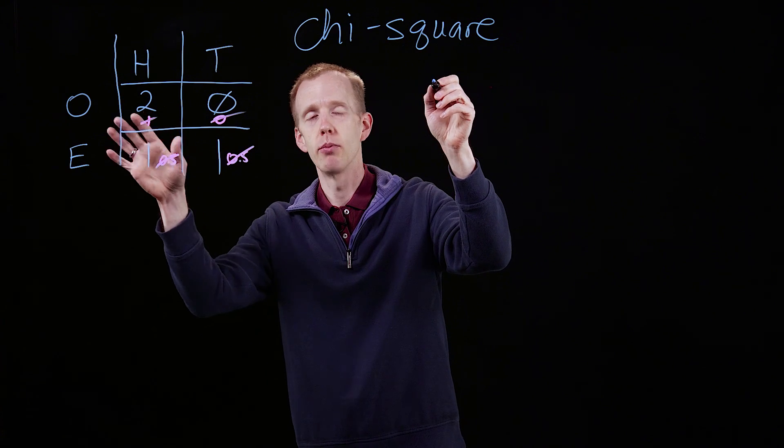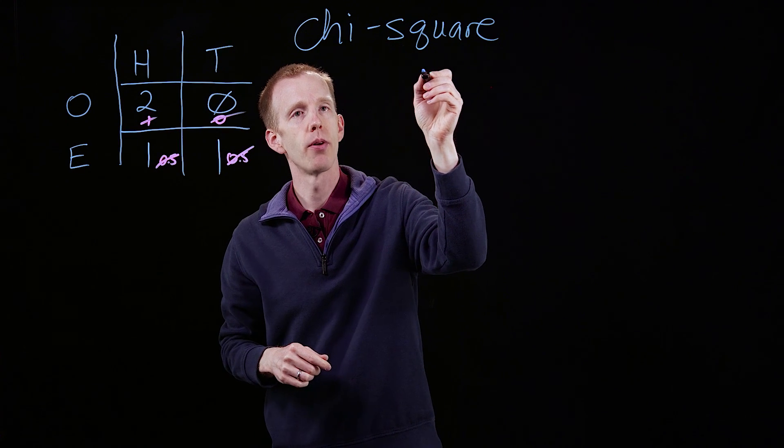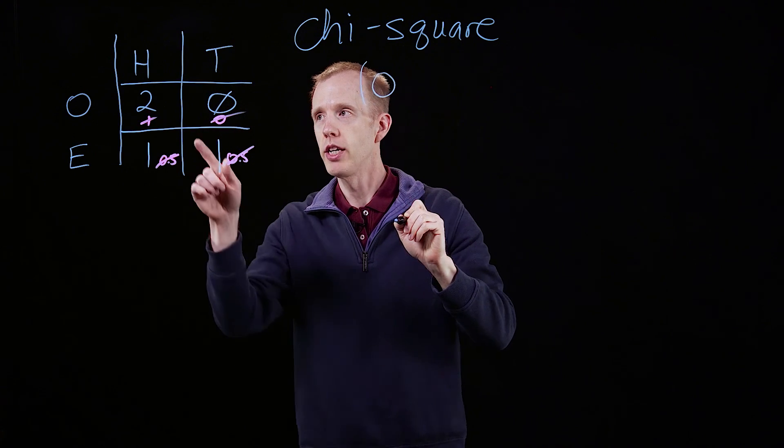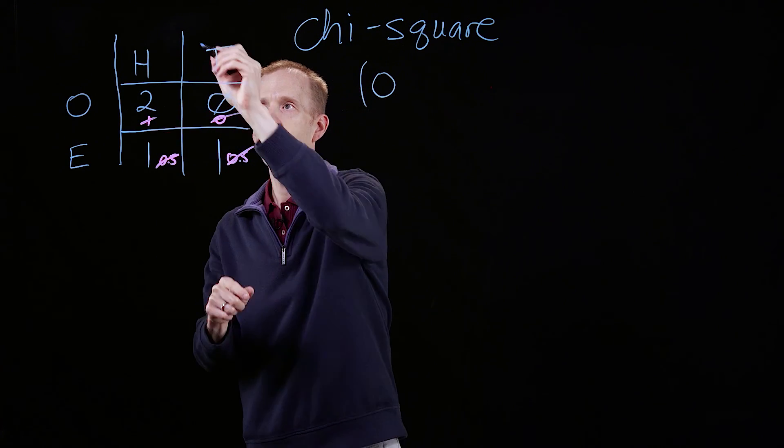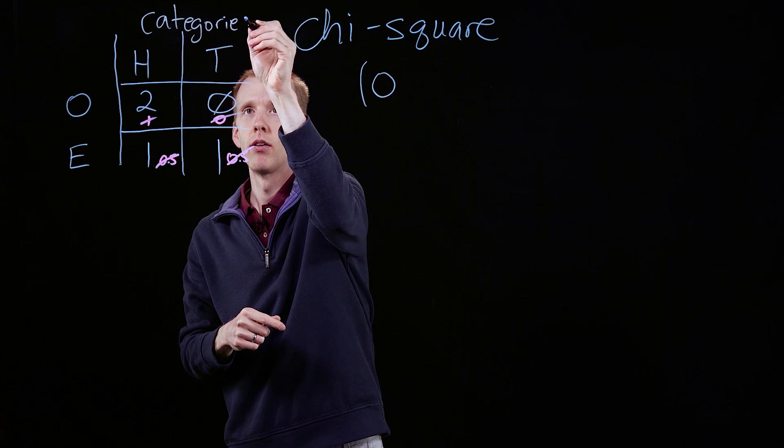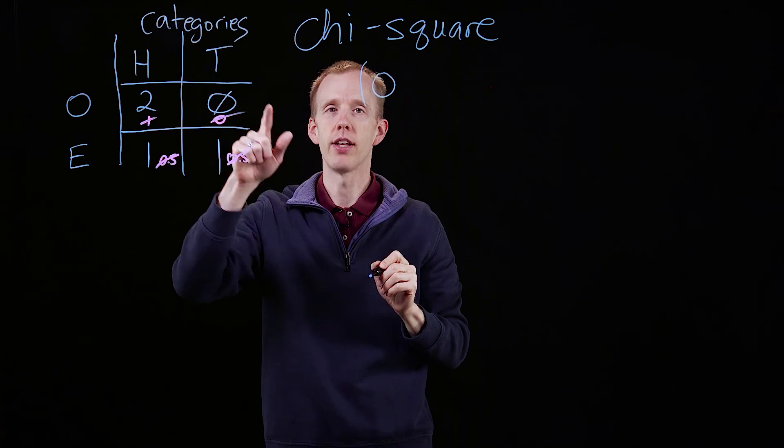The chi-square test compares the observed and the expected values as follows. You take the observed value for each of these two categories, two categories, heads and tails.